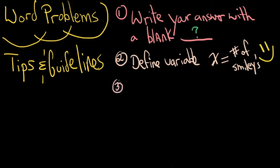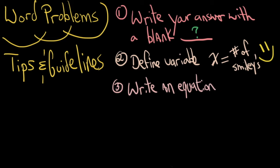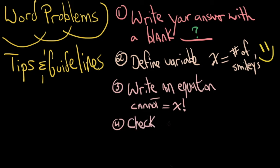The third thing of course is you have to write an equation. Now I want to write a little note on this one. Oftentimes young math students love to have an equation that equals x. So note: the equation cannot equal x. X can never be the answer to an equation — you have to have x somewhere else. And lastly, you always want to check: does it make sense? Ask yourself — does the answer actually make sense? Follow these things and you should be good to go.